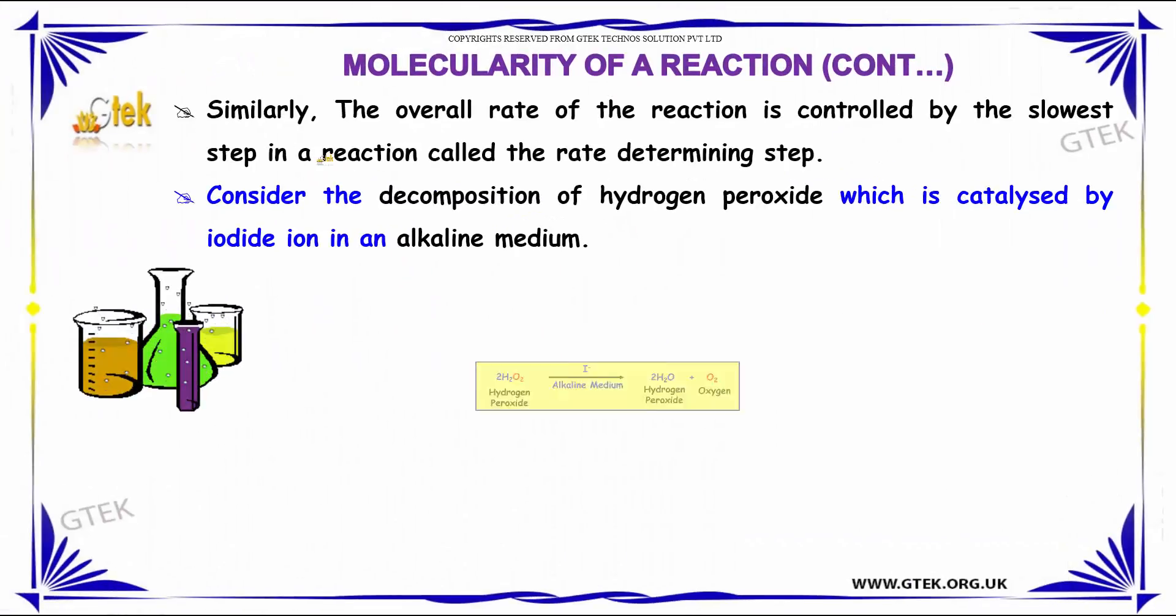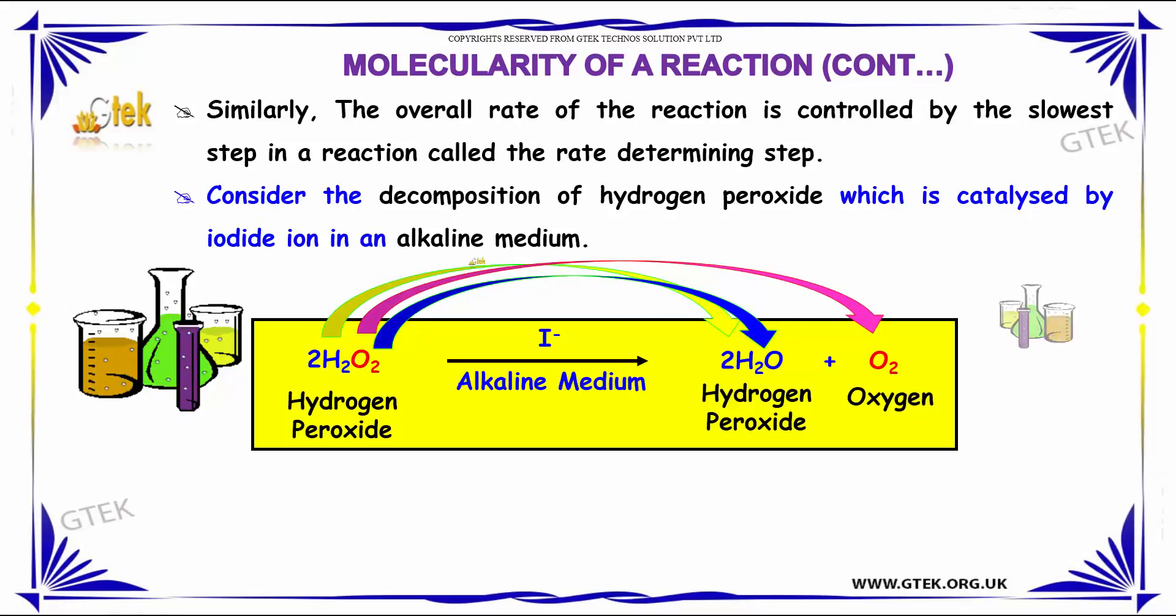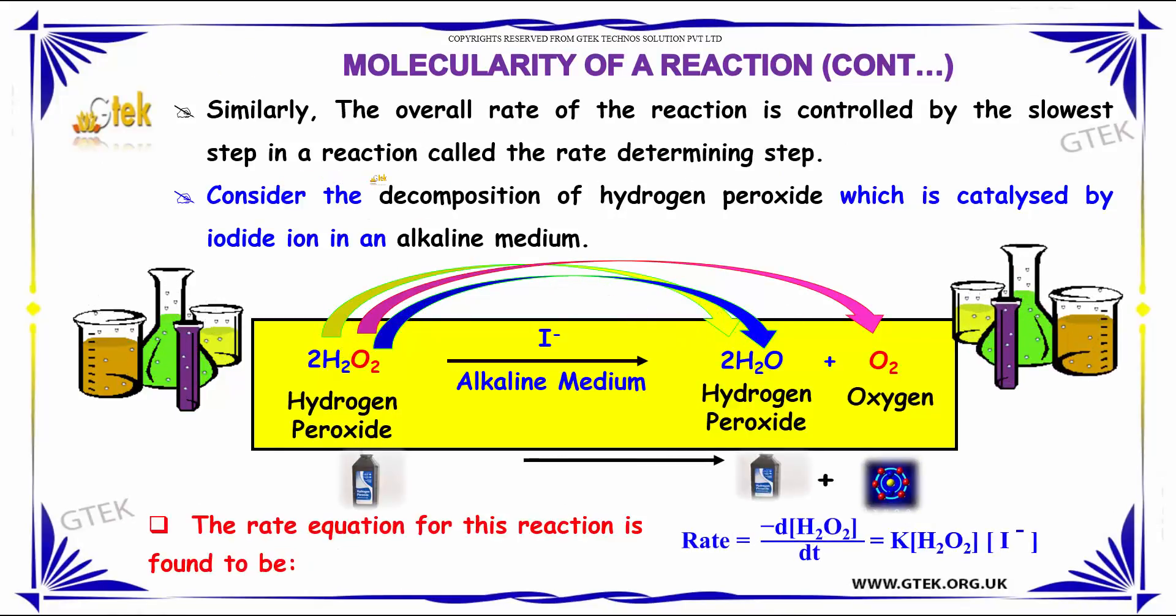Similarly, the overall rate of the reaction is controlled by the slowest step in your reaction, the rate determining step. Consider the decomposition of hydrogen peroxide which is catalyzed by the iodide ion in an alkaline medium. The rate of the reaction can be given as rate equals minus d[H2O2]/dt equals K[H2O2][I-].